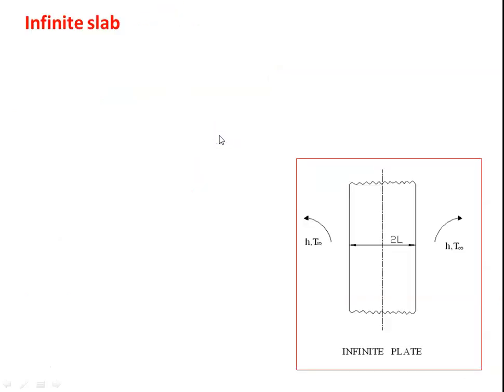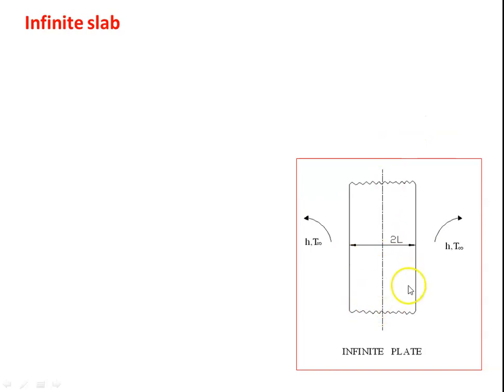This is the infinite slab — a slab of length 2L, with x equal to 0 at the center, x equal to L at the right side, and x equal to L on the left side. The slab is initially at a particular temperature, the initial temperature. Suddenly, the slab is immersed in a liquid bath with temperature T infinity and heat transfer coefficient h. We have to calculate the temperature in the slab for any given time, any position, and also the amount of heat transfer during a particular time.